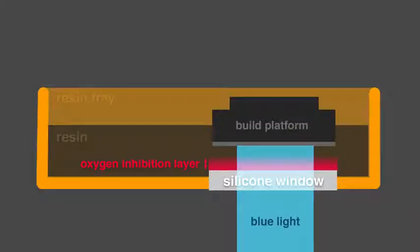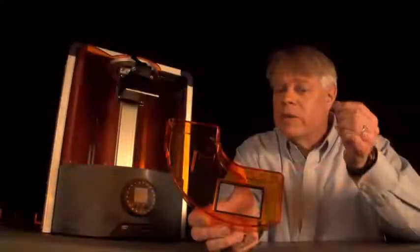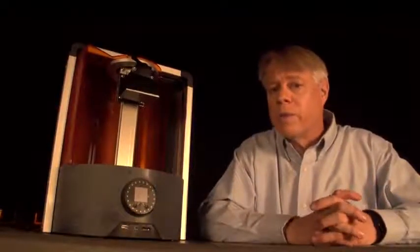Yet even with this silicone window, the newest layer will still partly adhere to the window. If it does, then no fresh, uncured resin will be able to be added. And so, no new layers. So the newest layer must be separated from the window. There are several ways to do this. Some printers just pull the layer up. Yet this direct pull, as it's called, can create problems. This layer is like a suction cup.